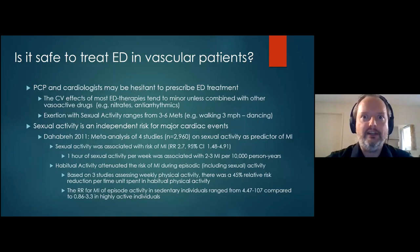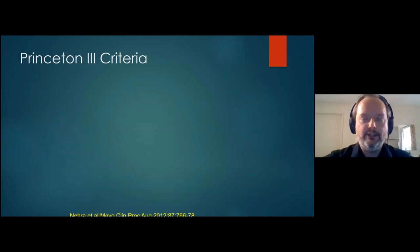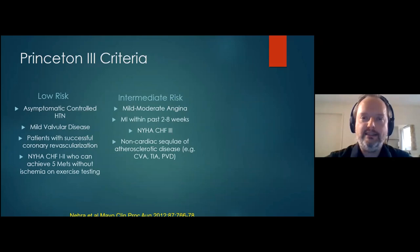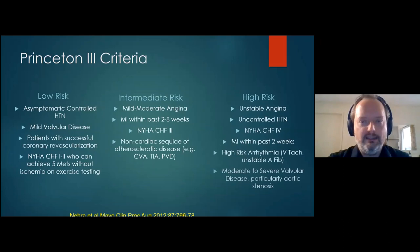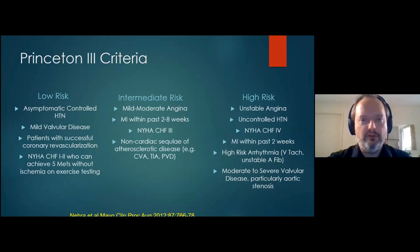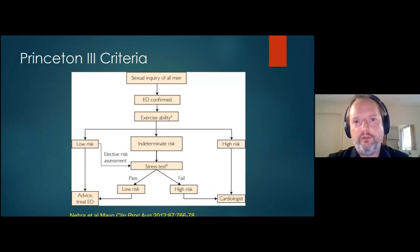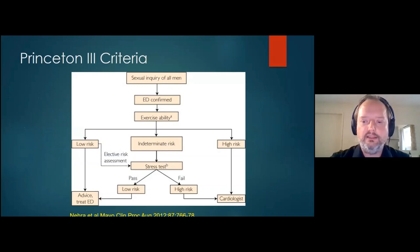The Princeton III criteria are stratified rules for who should and should not be treated for sexual dysfunction, with three major risk categories. You wouldn't treat a patient with uncontrolled hypertension, unstable angina, or unstable arrhythmia — sex shouldn't be a top priority. A patient with simple controlled hypertension can be treated without concern. The intermediate risk group requires some evaluation, and a simple stress test can be informative to triage whether a patient needs cardiology evaluation or can proceed with ED therapy without further workup.